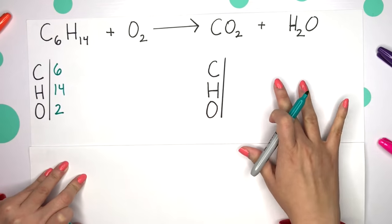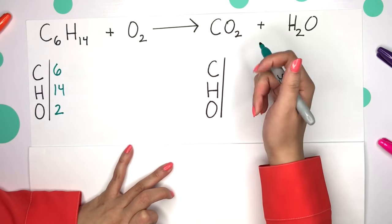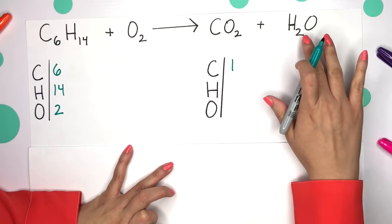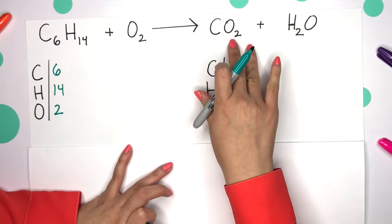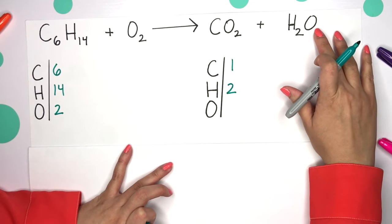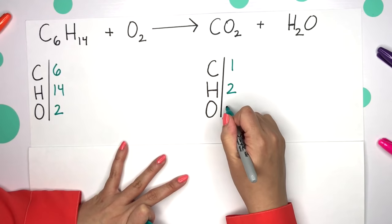And oxygen, there's two. Looking on our product side, carbon, we only have one. Hydrogen, we have two. And oxygen, beware of this, we have two plus this other one. So we have a total of three oxygen.